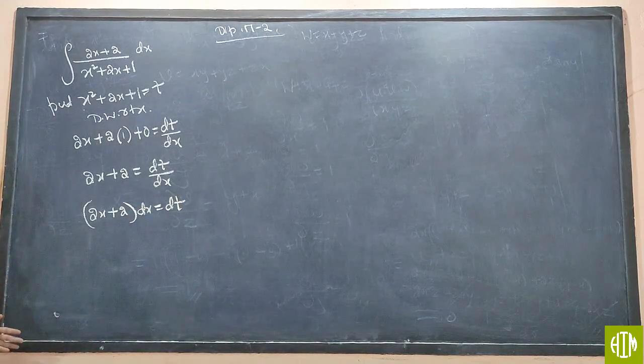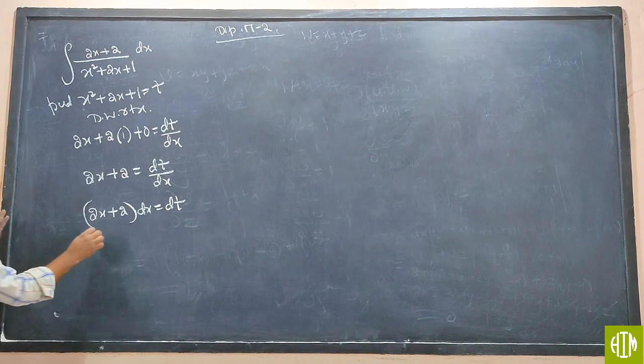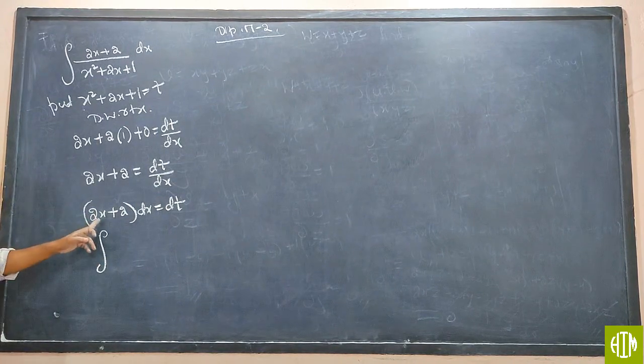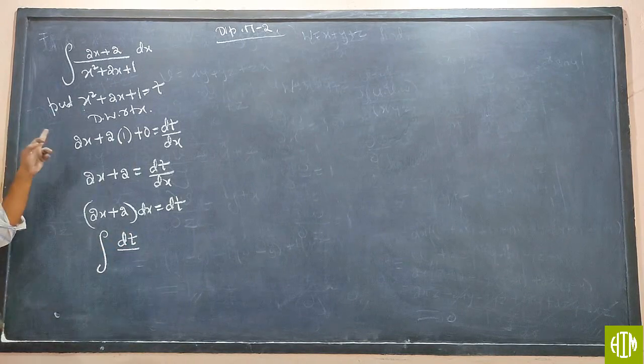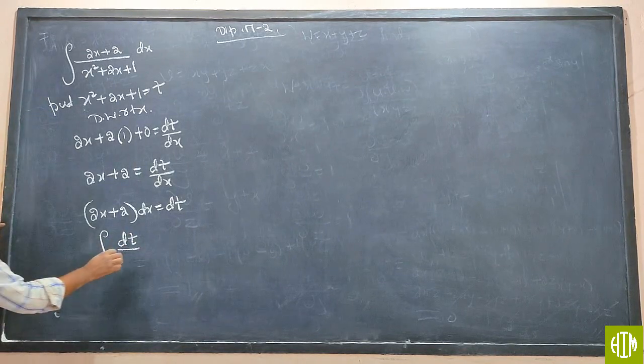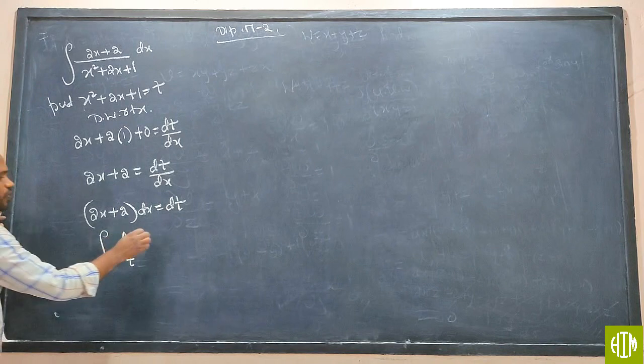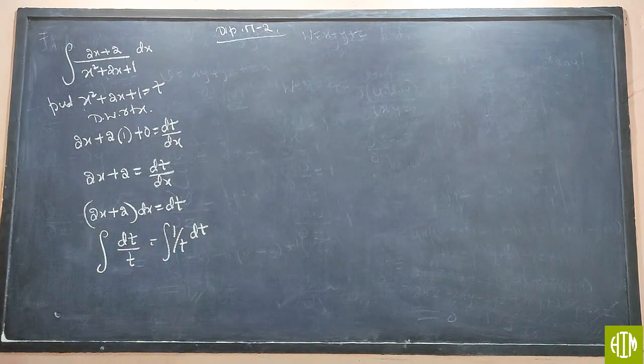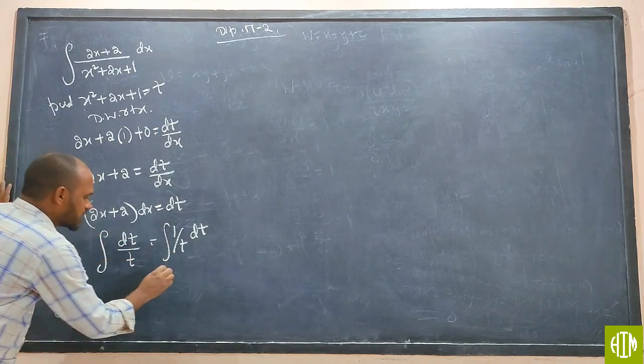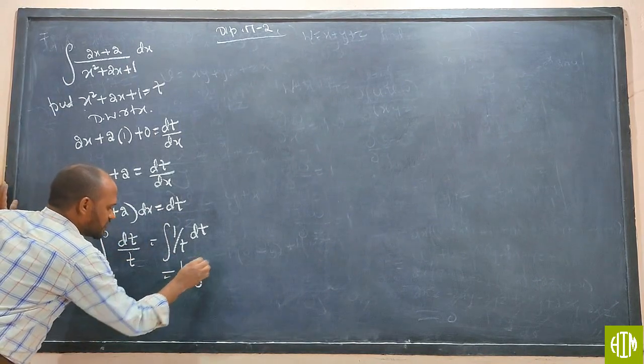Now we have converted it from x to t. What is 2x plus 2 dx is nothing but dt. X squared plus 2x plus 1 is nothing but t. Now we know integral of 1 by t dt. Integration of 1 by x is nothing but log x. 1 by t is nothing but log t.